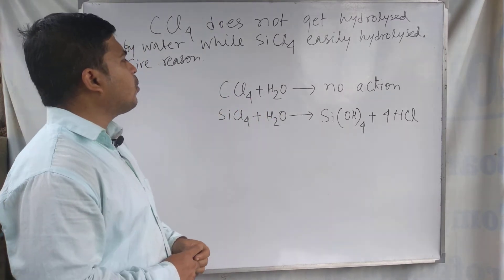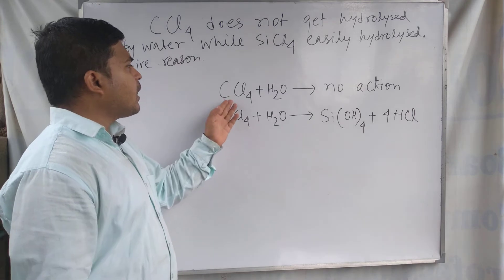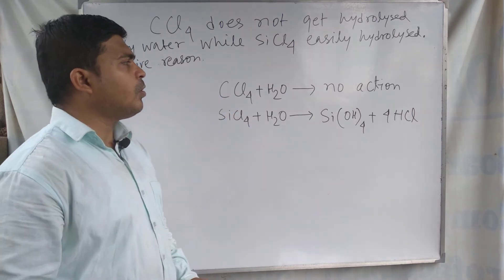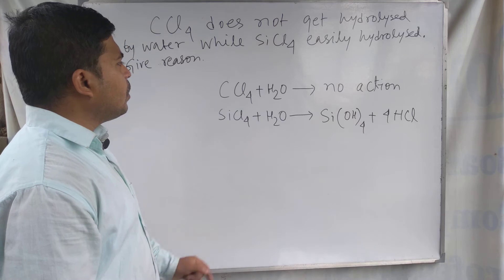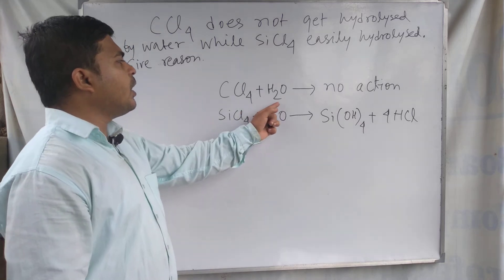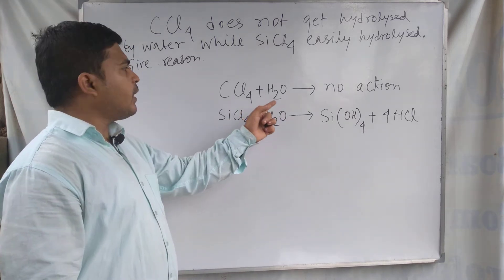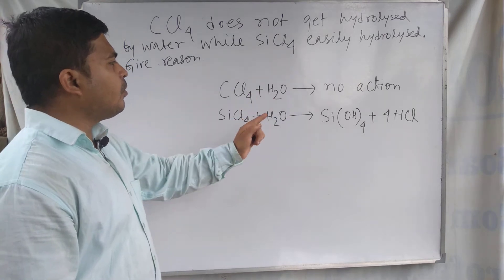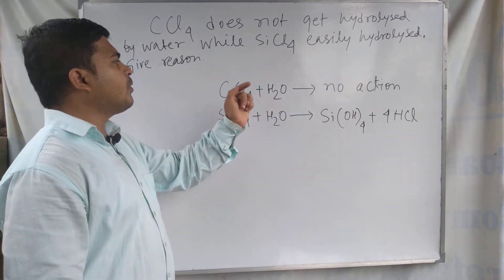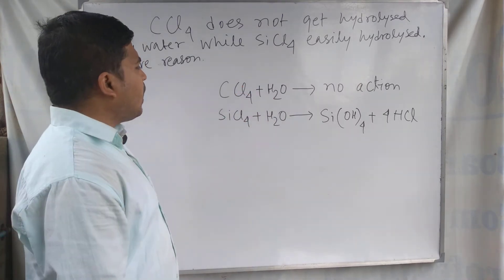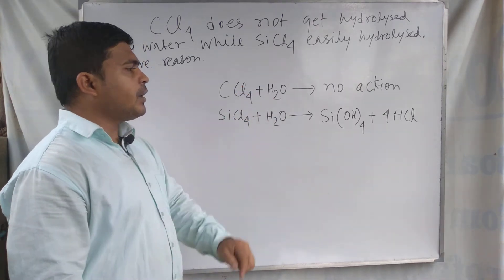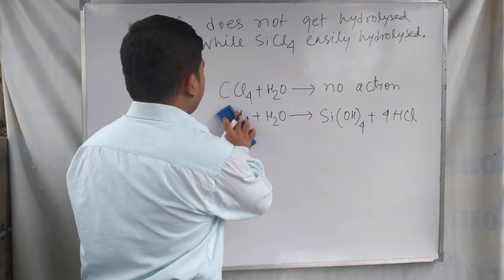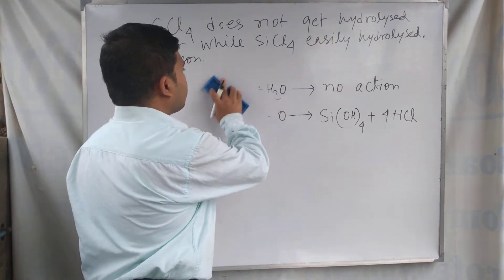In the case of carbon tetrachloride, the carbon atom has no vacant d orbital. As a result, in the first step of hydrolysis, water cannot attack the carbon atom — this step does not occur in carbon tetrachloride. But in silicon tetrachloride, we can draw this situation.